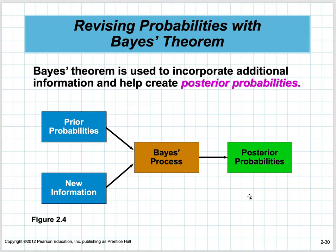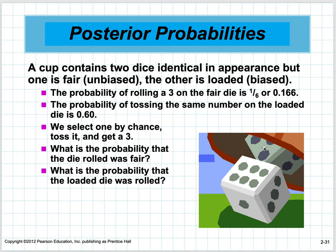Bayes' theorem is used to incorporate additional information to create posterior probabilities — starting from prior probabilities, adding new information through the Bayes process to get posterior probabilities. For example: a cup contains two dice identical in appearance, but one is fair and one is loaded. The probability of rolling a 3 on the fair die is 1/6 or 0.166; on the loaded die it's 0.6. We select one by chance, toss it, and get a 3. Now we ask: what is the probability the die rolled was fair, and what's the probability it was the loaded die?